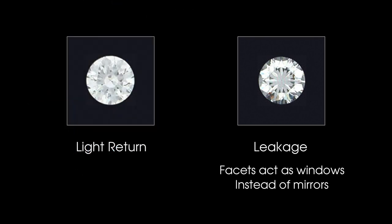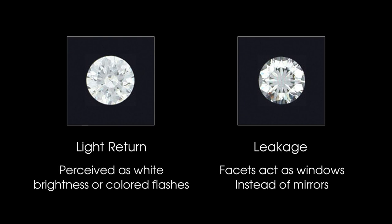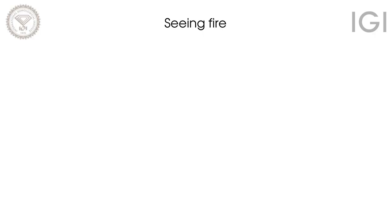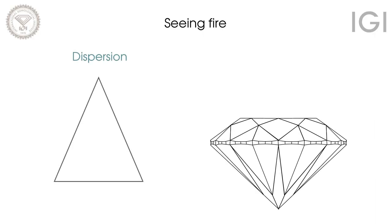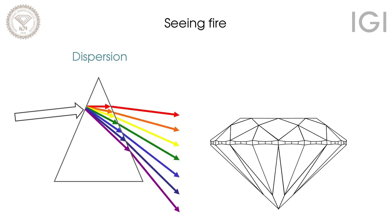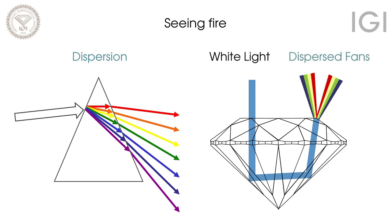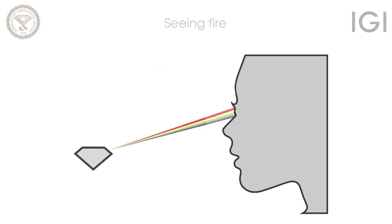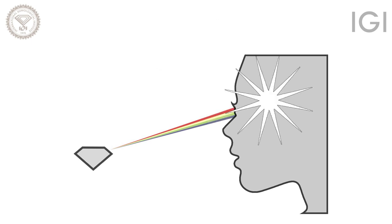Light returning to a viewer's eye may be perceived as white brightness or as colored flashes known as fire. Dispersion within a diamond separates white light into its component colors so that light entering a diamond exits as dispersed fans of color. If all colors enter the pupil at once, the human brain recombines them and the fan is seen as white brightness.